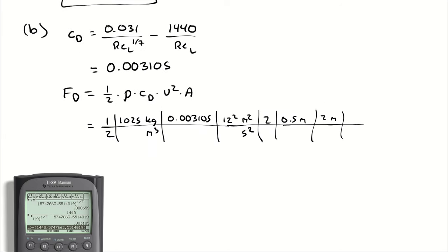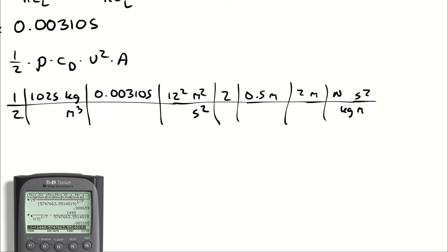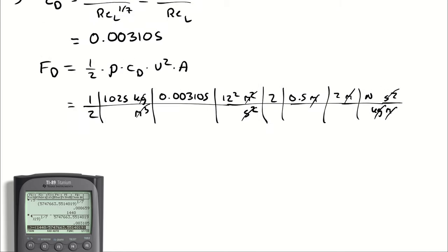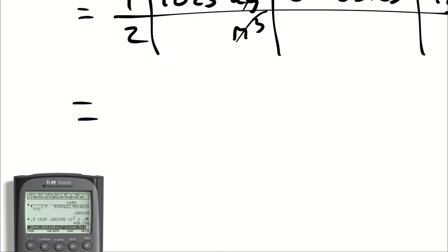Let's assume we want an answer in newtons. And we can adapt to kilonewtons if we need to. A newton is a kilogram meter per second squared. So, kilograms cancel kilograms, meters cancels one of the meters, second squared cancels second squared, square meters and meters cancels cubic meters, leaving me with newtons. So, 0.5 times 1,025 times 0.003105 times 12 squared times 2 times 0.5 times 2. We get a drag force of 458.3 newtons.